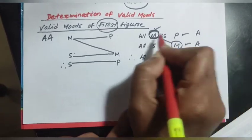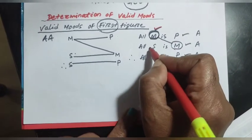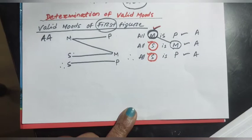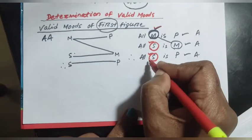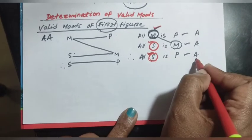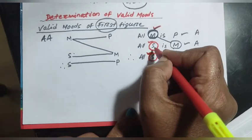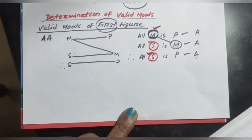In the first proposition, A proposition distributes the middle term. In the minor premise, S is also distributed. In the conclusion, S is also distributed. The minor term distributed in the conclusion is also distributed in the minor premise — the rule is not violated. The conclusion is A and the argument is free from any kind of fallacy.